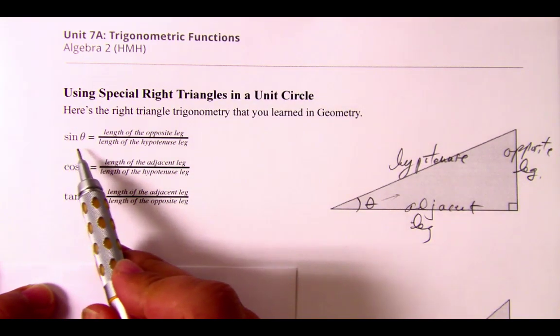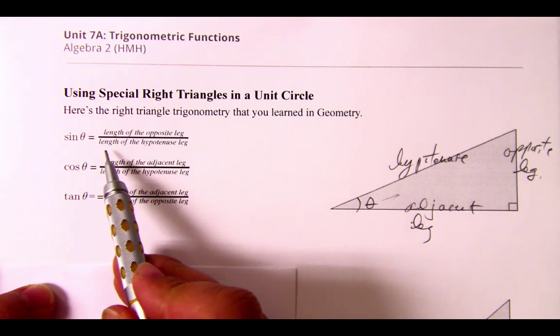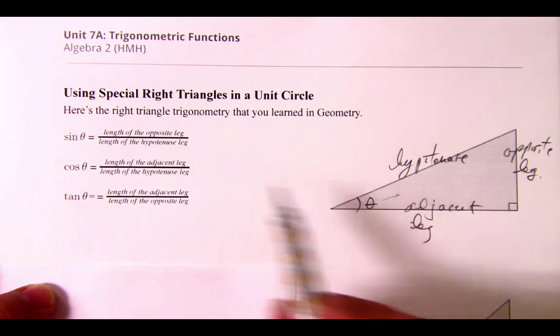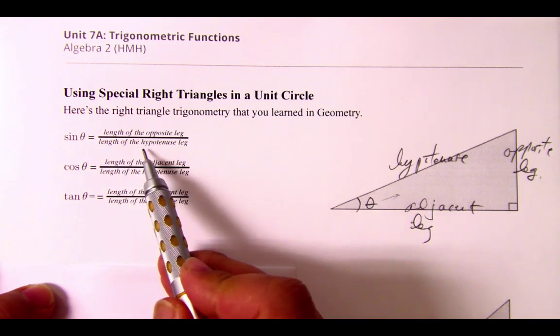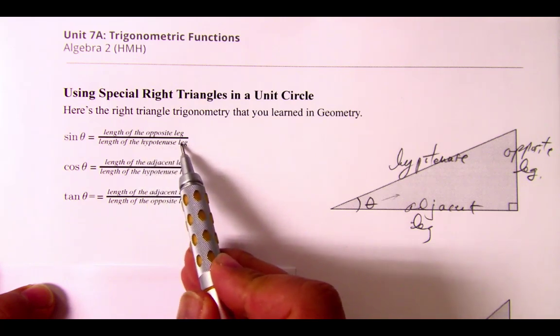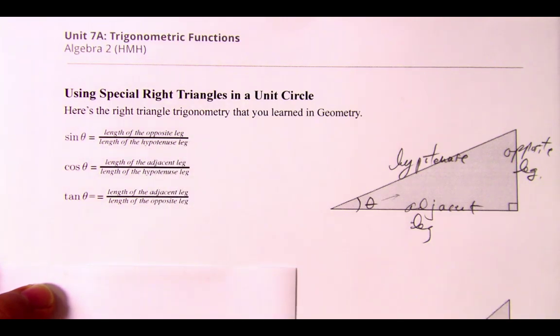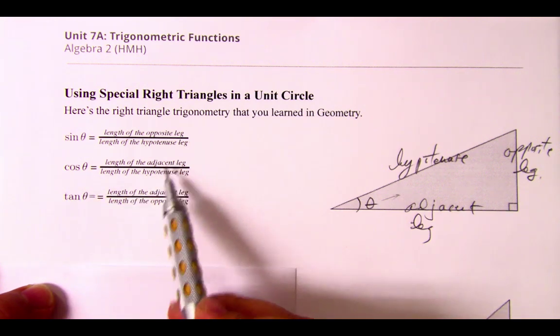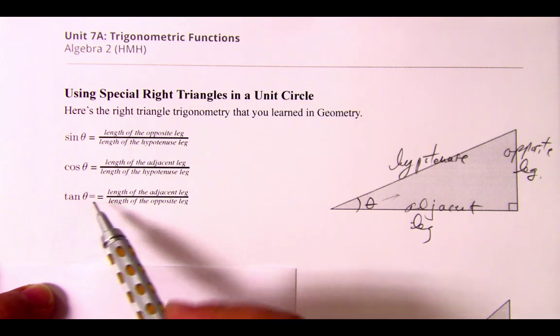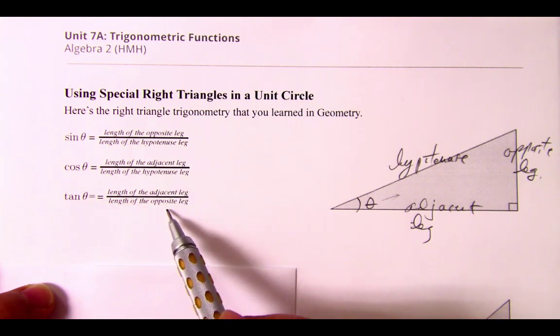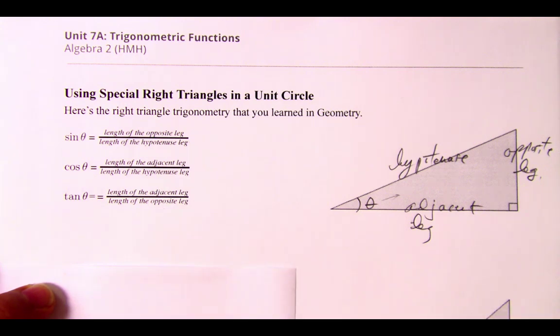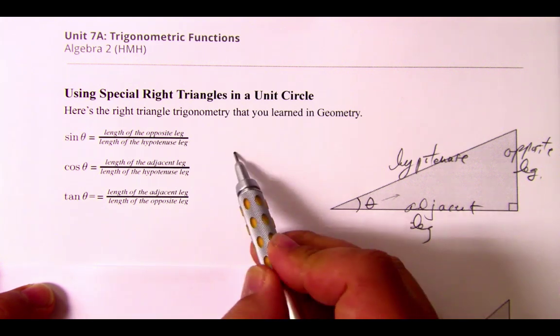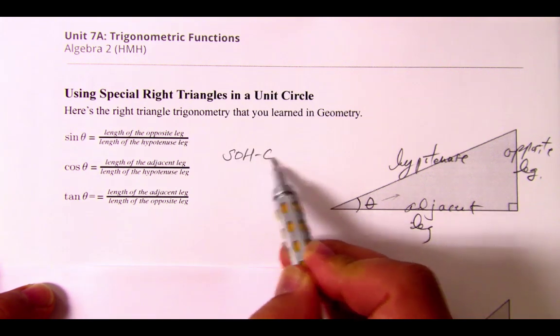We define sine theta as the length of the opposite leg divided by the length of the hypotenuse. Oftentimes we don't call it hypotenuse leg, simply referring to it as hypotenuse is sufficient. Continuing on, cosine is defined as adjacent over hypotenuse, and tangent is defined as opposite over adjacent.